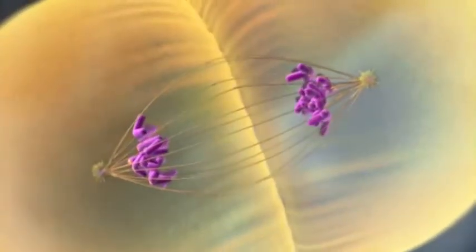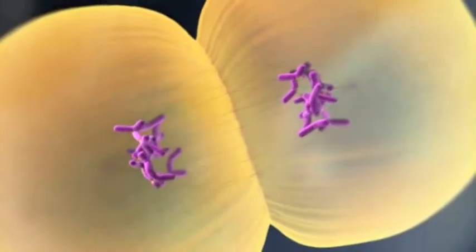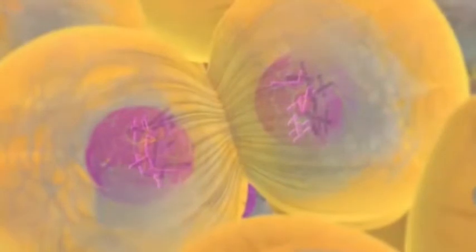Once the chromosomes arrive at their destination, they become less condensed. Two new nuclear envelopes form, completing mitosis, the division of one nucleus into two genetically identical daughter nuclei.